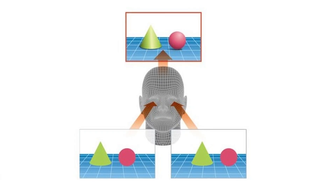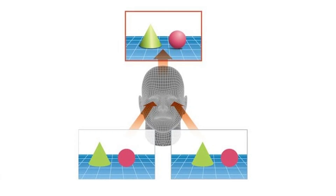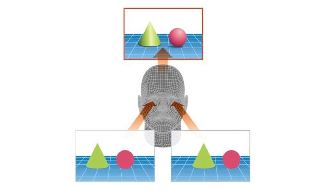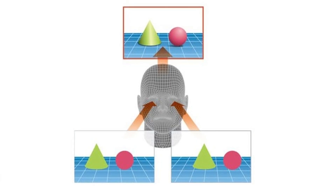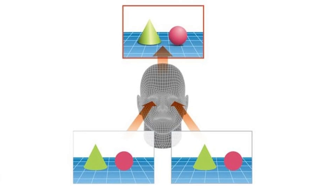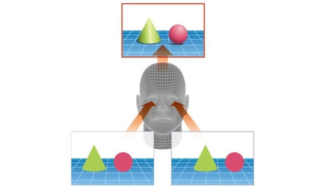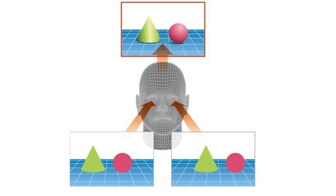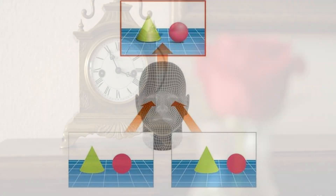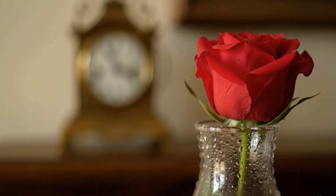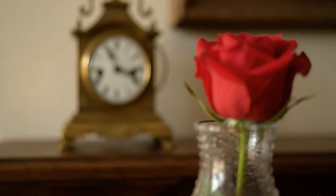Each eye sees objects from a slightly different angle, sending its own signal to the brain. From a very early age, our brain learns to merge both images so that we do not see double contours. The superimposed images allow us to perceive the volume of objects and see that one object is in front of or behind another. This phenomenon is known as three-dimensional imaging, or 3D.